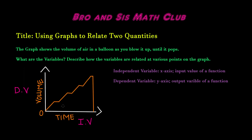Hi guys, welcome back to Brownsys Math Club. Today we'll be learning how to use graphs to relate two quantities. This graph here shows the volume of air in a balloon as you blow it up until it pops. What are the variables, and describe how the variables are related at various points on the graph.